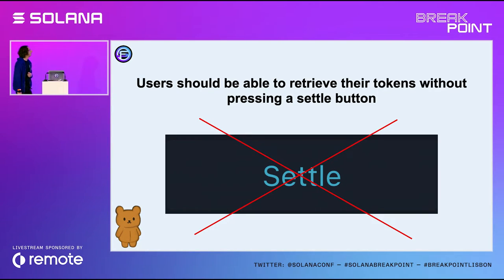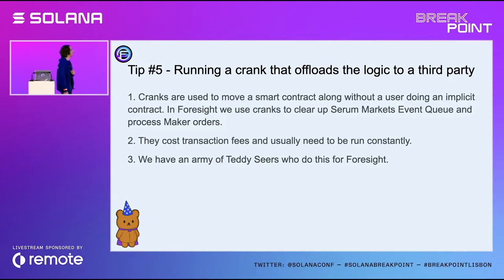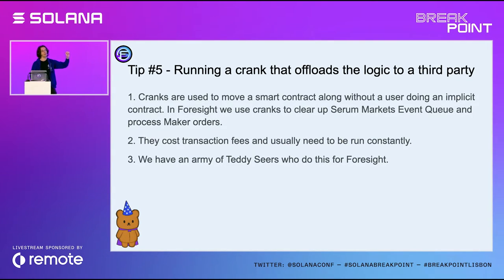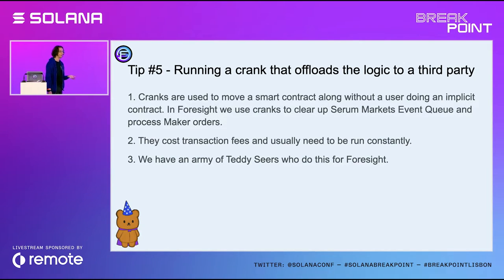The final thing I want to talk about is getting rid of the concept of settling. We have a custom crank but I didn't get a chance to include it in this presentation. Essentially, in order to abstract the idea that something is happening on the blockchain without requiring user input, you need a third party to run transactions and move order flow across time. The most common way is a crank. You don't need it for every type of program — in an AMM, transactions settle instantly — but if you're a market order waiting 15 minutes to be filled, you can't really do that. So we use cranks to clear up the Serum market events queue and process market orders.